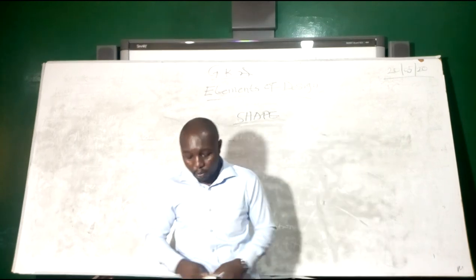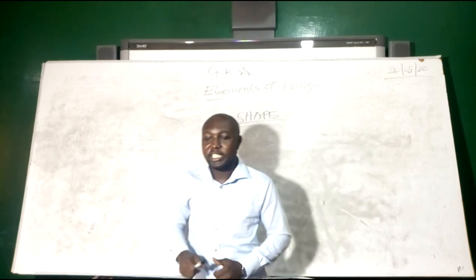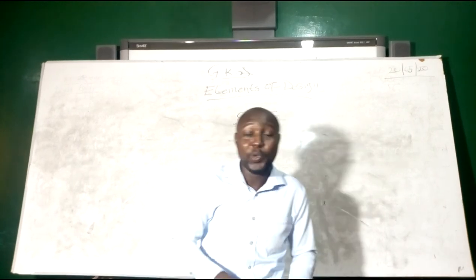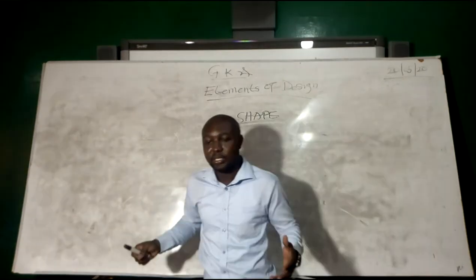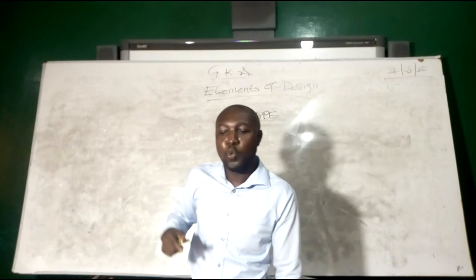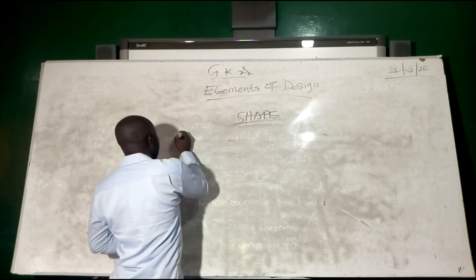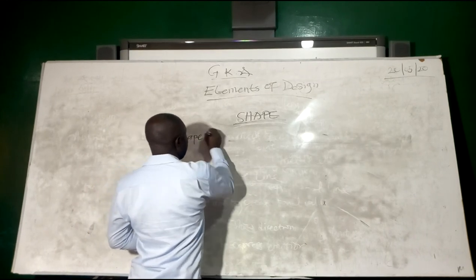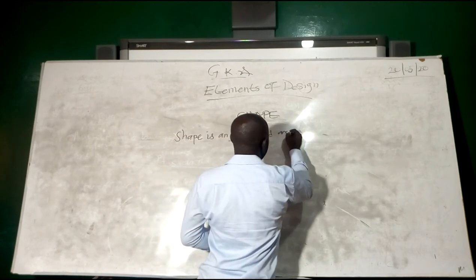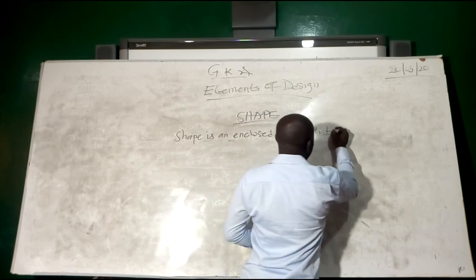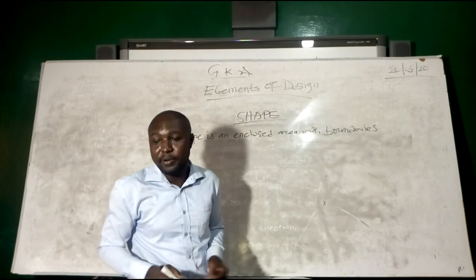Shape is another element of design. So what is shape? Shape is an enclosed area with boundaries. Let's write a definition: shape is an enclosed area with boundaries.